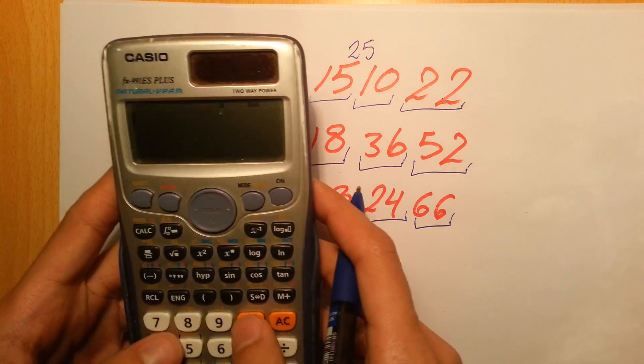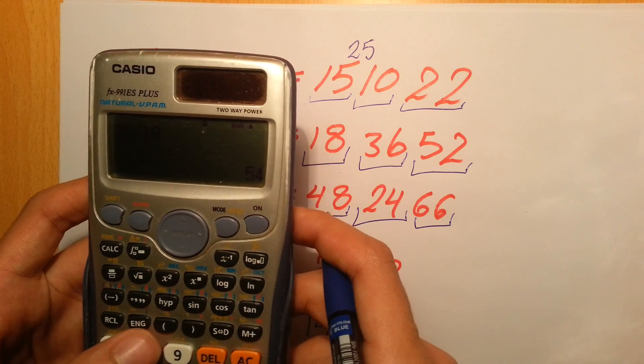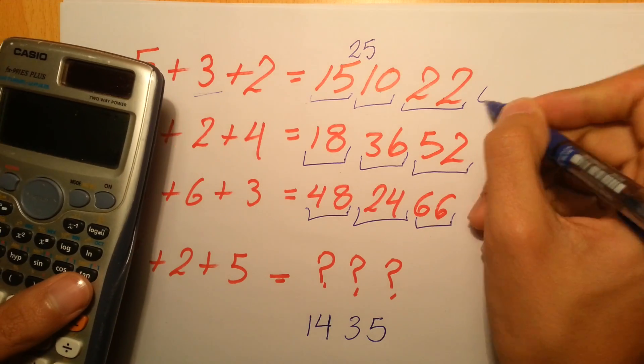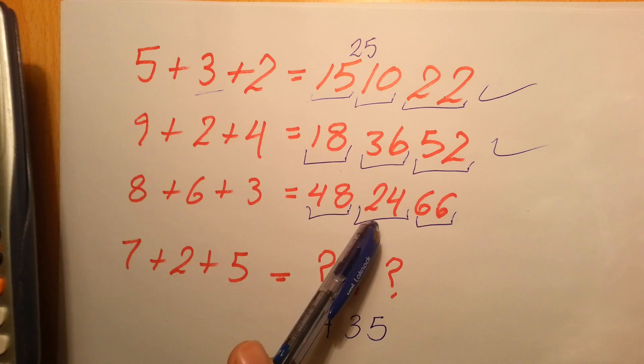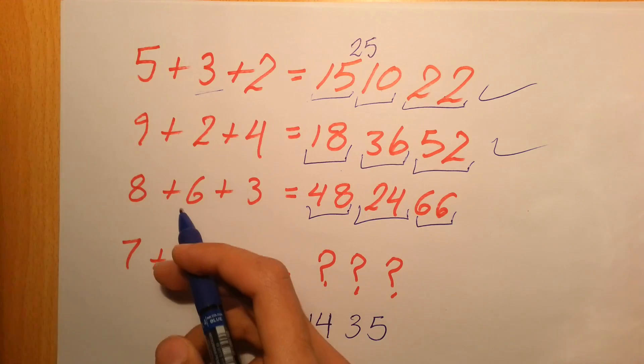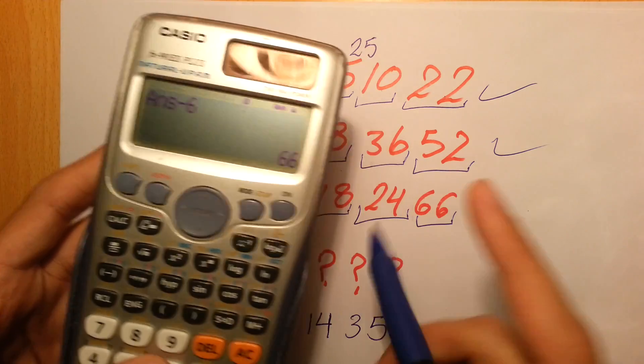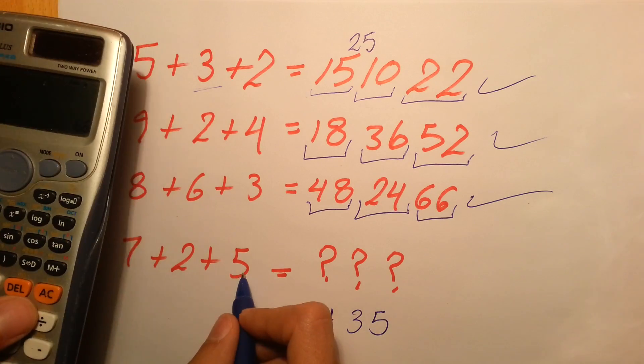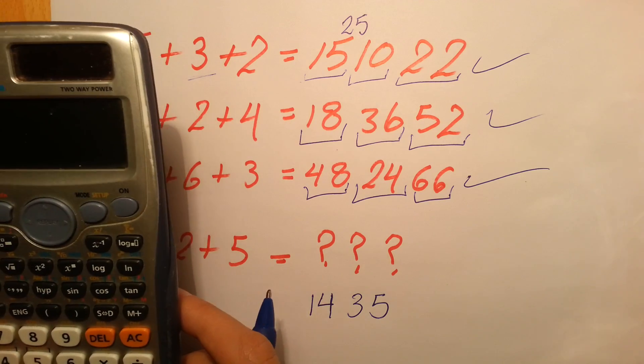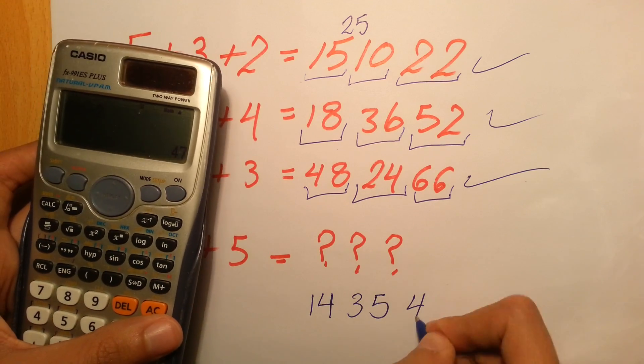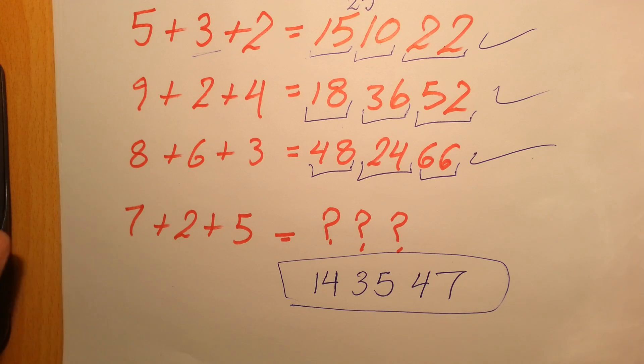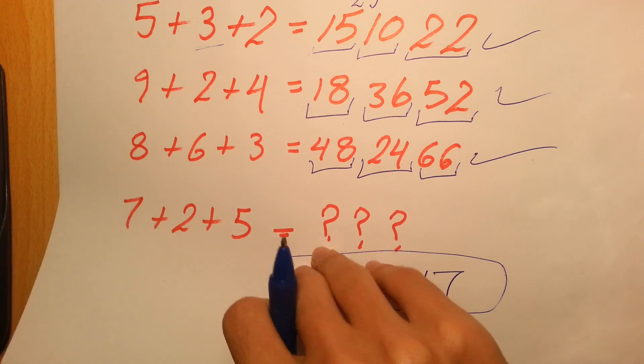So what we did basically is 15 plus 10 minus the middle number, which is 3, gives you 22. Let's check with the second one. We have 36 and 18, that gives you 54 minus 2 gives you 52. Then it's right. Let's check the last one. It's 24 plus 48 minus 6 gives you exactly 66. Then that's right. Then you go directly to this one. It will be 14 plus 35 minus 2 gives you 47. So the solution for 7+2+5 equals 143547. This is the first riddle.